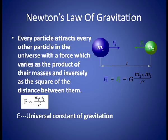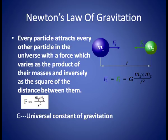Suppose we are taking two particles m1 and m2, and the distance between them is r. We can write F is proportional to m1 times m2, and F is inversely proportional to r square. So F is proportional to m1·m2 divided by r square. Multiplying by a constant of proportionality G, we get F = G·m1·m2 / r², where G is called the universal constant of gravitation.